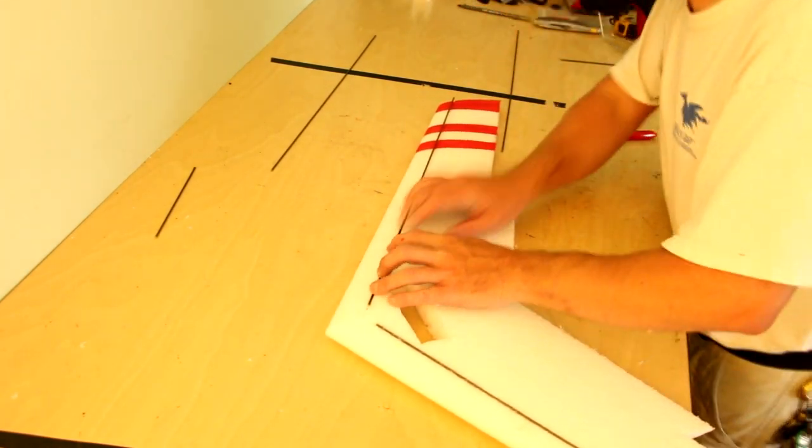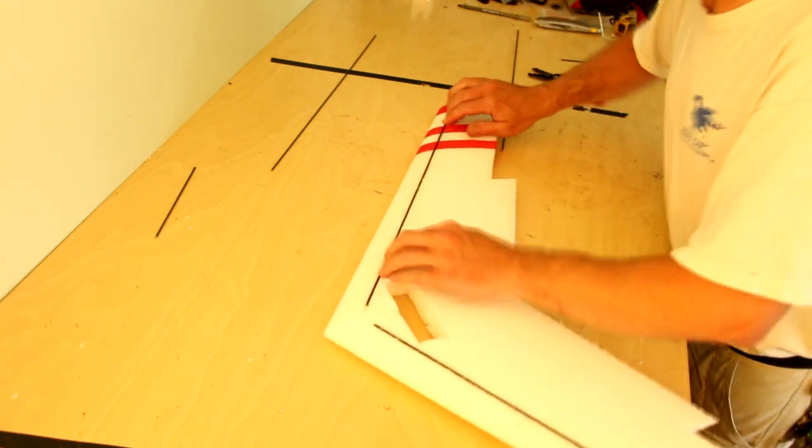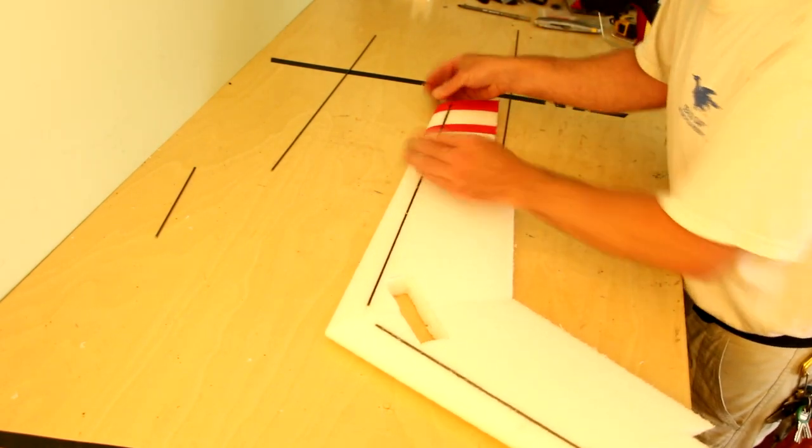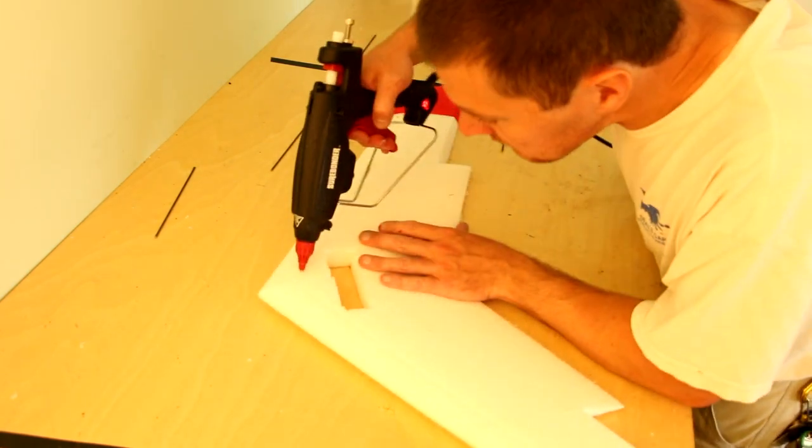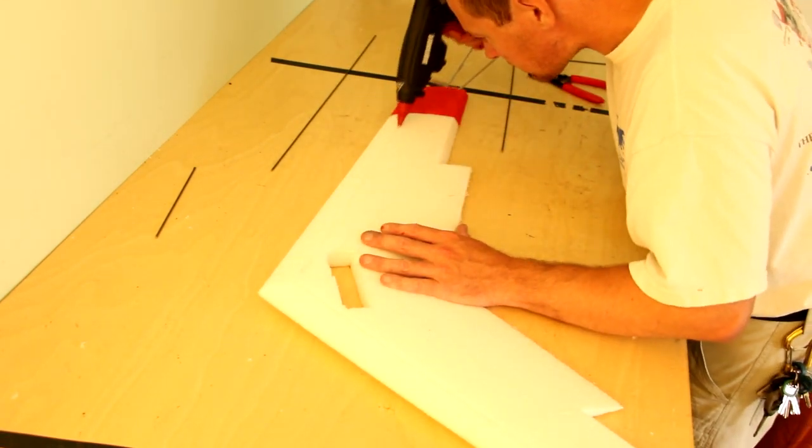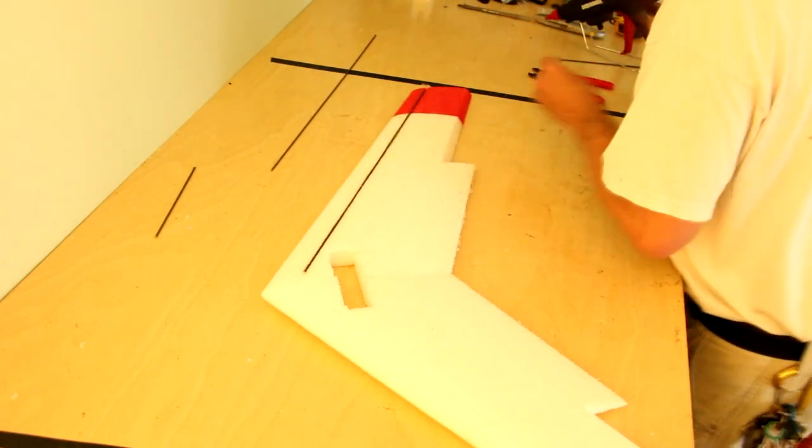To glue them in place, I'm using hot glue, but welder or goop works just fine. Just add your glue to the track and then embed the spar. Do this on the top and the bottom side and let it dry before moving on to the next step.